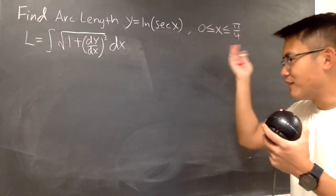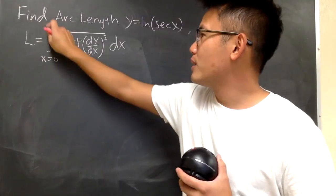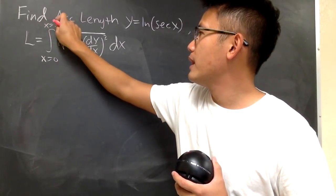And they gave us the x values, that's really nice. So x goes from 0 to π/4, like that.